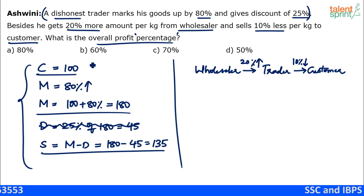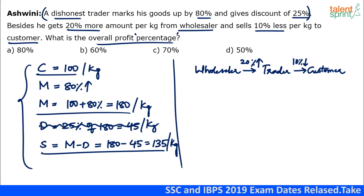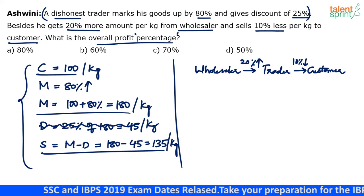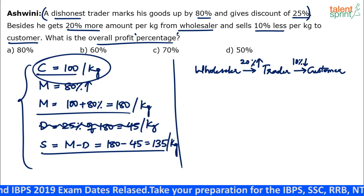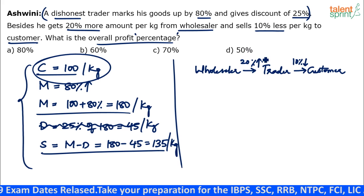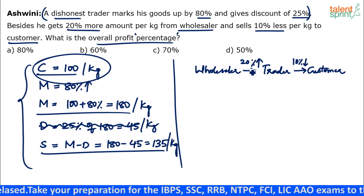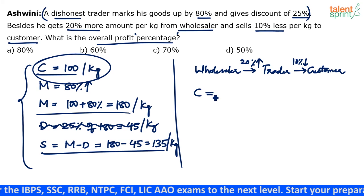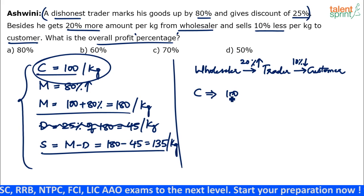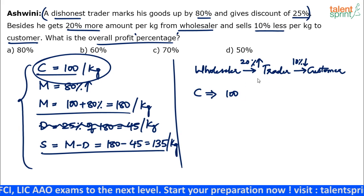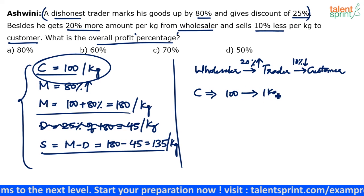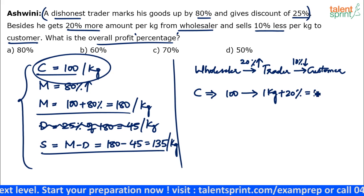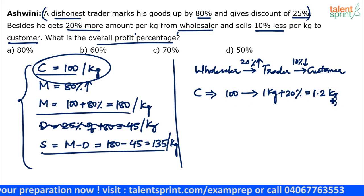Let's assume all these prices are per kg: cost price is 100 rupees per kg, mark price is 180 rupees per kg, and selling price is 135 rupees per kg. When buying from the wholesaler, he gets 20 percent more, so he pays 100 rupees but actually receives 1 kg plus 20 percent, which equals 1.2 kgs. So he's spending 100 rupees for procuring 1.2 kgs.